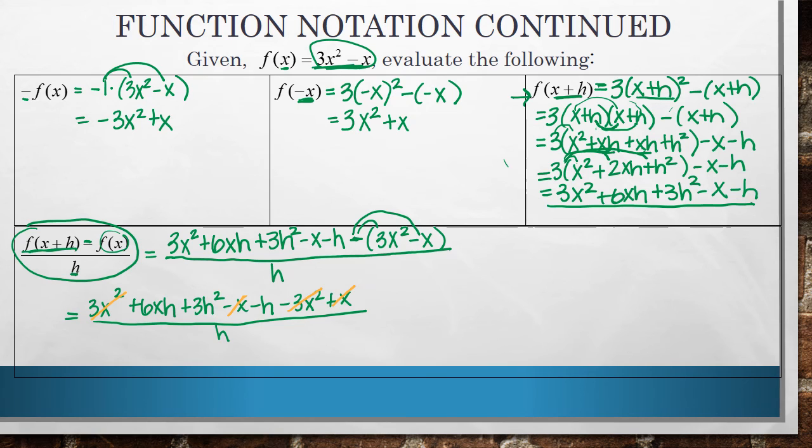I'm going to write a little move up here. So that ends up becoming 6xh plus 3h squared minus h all over h. Now a lot of students at this point want to just cancel an h out of the top and the bottom, but you can't do that.